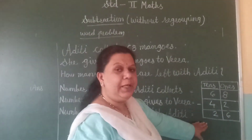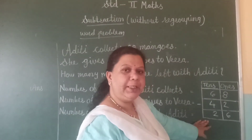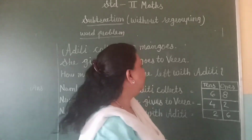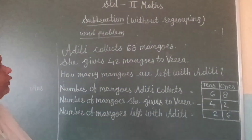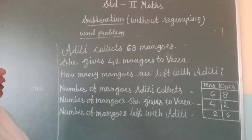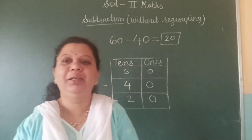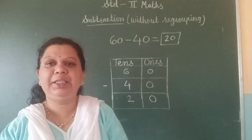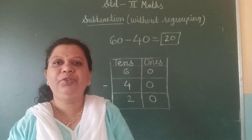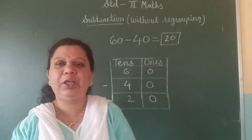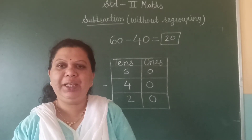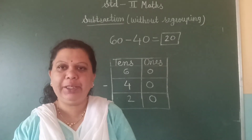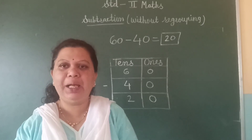Here, we got the number twenty-six. Means, twenty-six mangoes are left with Aditi. Children, in this session you have learnt subtraction without regrouping. See you again in the next session. Thank you. Bye.